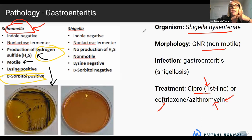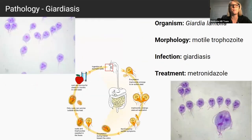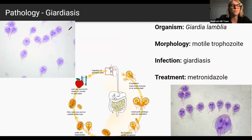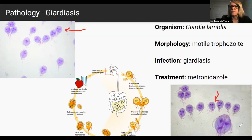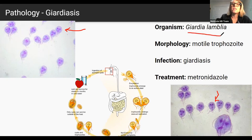Giardia lamblia is a motile trophozoite that we can see often in the stool. This comes from contaminated water sources — like the fresh river water the patient drank while camping.